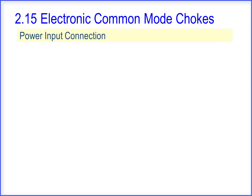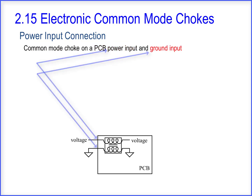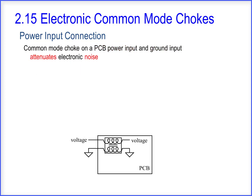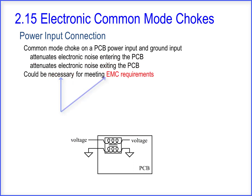Why use common mode chokes on power input connections? A common mode choke placed on a PCB near the power input and ground input can attenuate electronic noise entering the PCB. It also attenuates electronic noise exiting the PCB, which could be necessary for meeting EMC requirements.